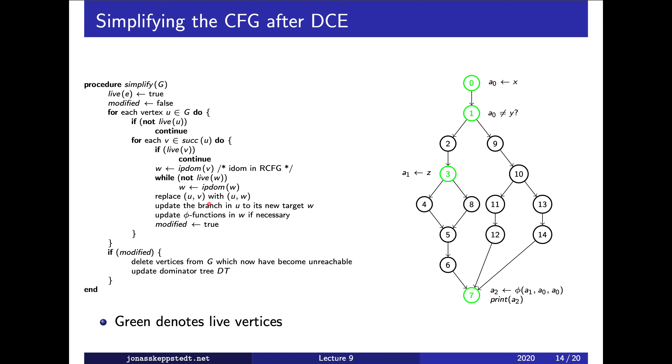When we've found the live immediate post-dominator, we replace the branch and update the statement and control flow graph. In some cases we don't have to do anything more, but if the vertex we branched to has a phi function, then we need to update that as well.